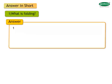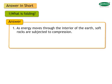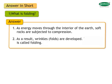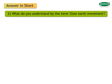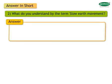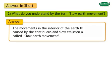What is folding? As energy moves through the interior of the earth, soft rocks are subjected to compression. As a result, wrinkles or folds are developed. This process is called folding. What is slow earth movement? The movements in the interior of the earth caused by continuous and slow emission of energy are called slow earth movements.